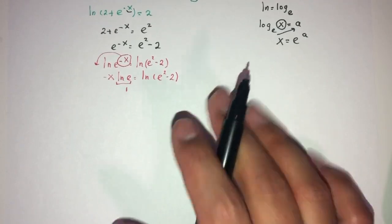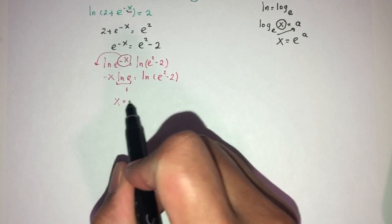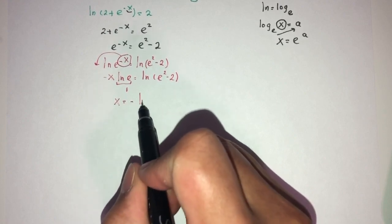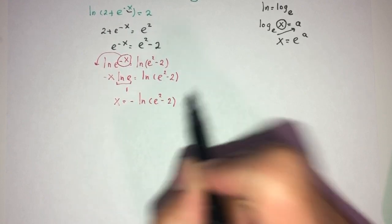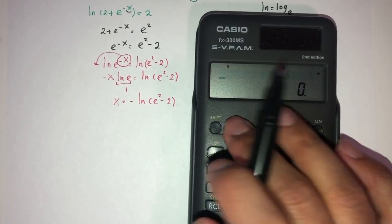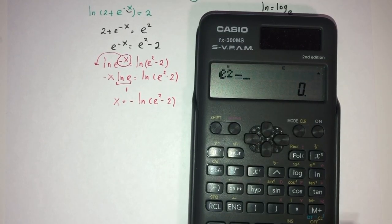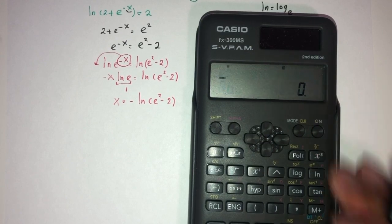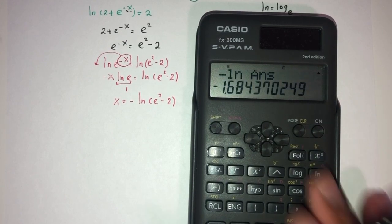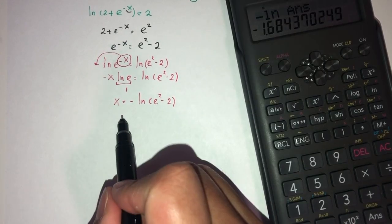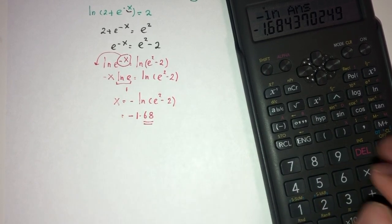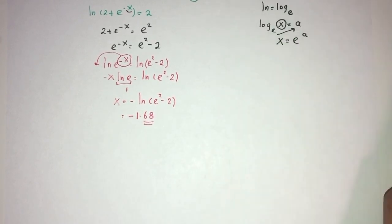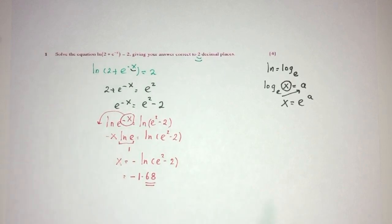So finally, x will have to be minus ln(e² − 2). We have e squared minus 2, then minus ln of that answer, which gives minus 1.68, correct to two decimal places. That is the value of x for question number 1.